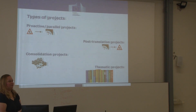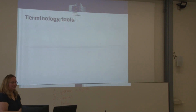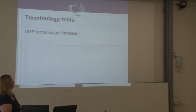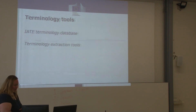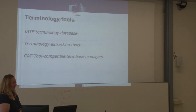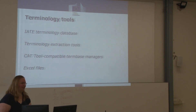We are still doing many things manually, and I think that's never going to change in terminology — and I also hope it doesn't, because the human brain is our biggest asset. But we have tools that help our work: first and foremost the IATE terminology database, then terminology extraction tools — though only recently adopted, as we still do a lot of manual extraction. We also have term-base management tools to prepare terminology for translators in the CAT environment, and we use Excel files as well, which are very useful and easy to handle.